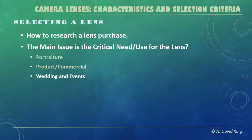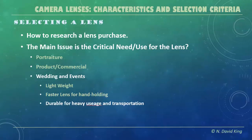How about weddings and events? Now we're getting into some interesting stuff from a lens standpoint. You're going to be moving around, so you want something lightweight. You may be carrying several lenses, so you don't want all that weight adding up. You want a faster lens because you'll be hand-holding shots. You want it durable because it's going to be in and out of cases. You may want fast switching of focal lengths, so a zoom lens could well be your best option here.